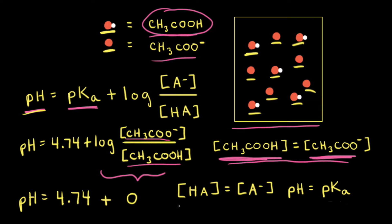So whenever the concentration of the weak acid is equal to the concentration of the conjugate base, the pH of the buffer solution is equal to the pKa of the weak acid.